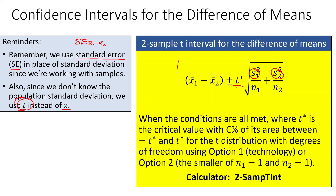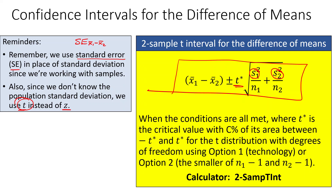To make the confidence interval, the formula is: the difference of the two sample means, plus or minus the critical value t-star times the standard error — that is, the standard deviation of the sampling distribution with sample standard deviations substituted instead of population standard deviations.